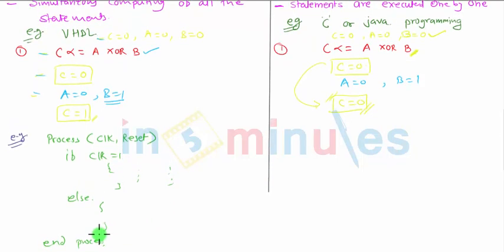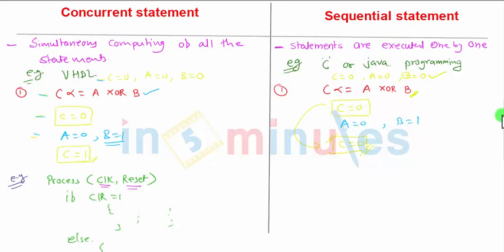Simultaneously, whenever clock or reset changes, the entire process is changed. And the values are updated automatically due to the concurrency. That's why the concurrency has more importance here in the VHDL.